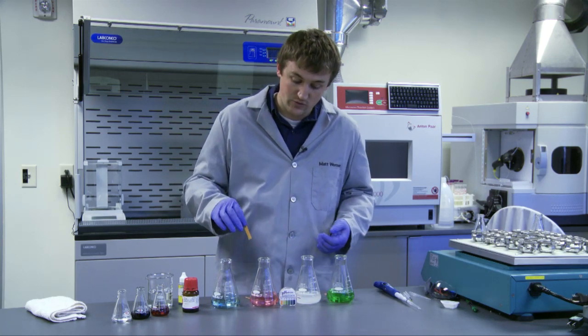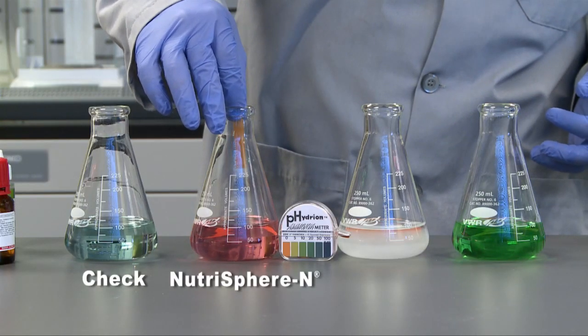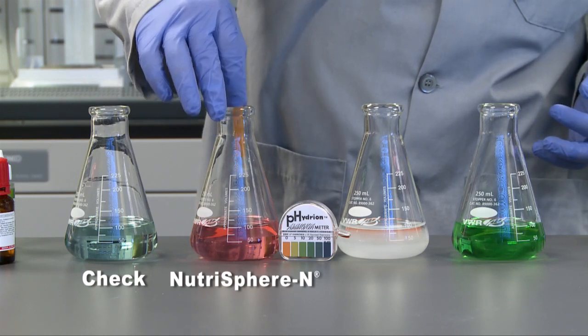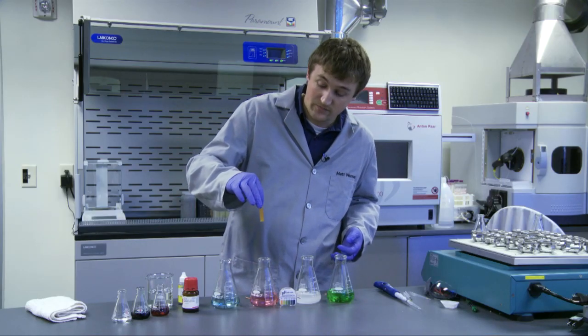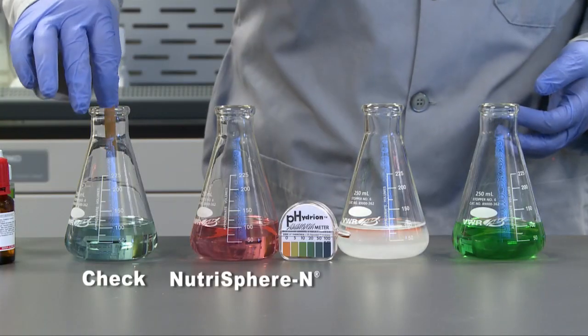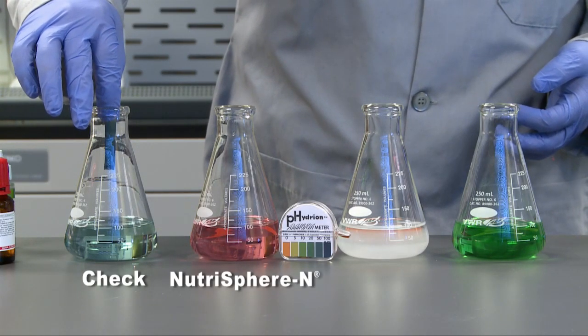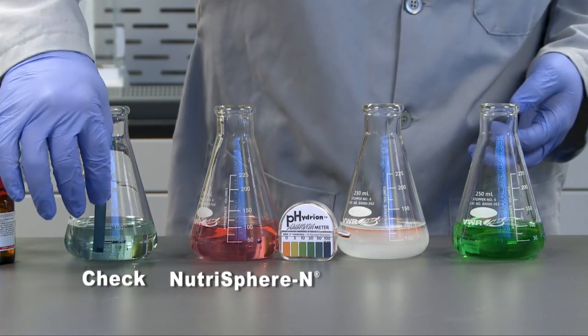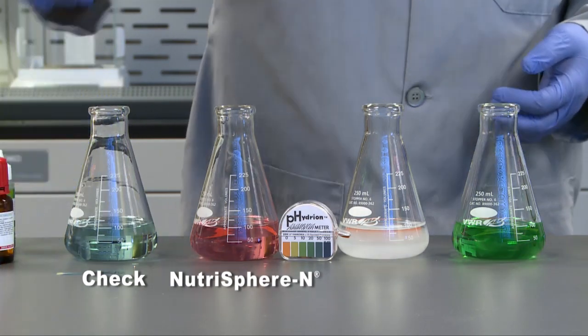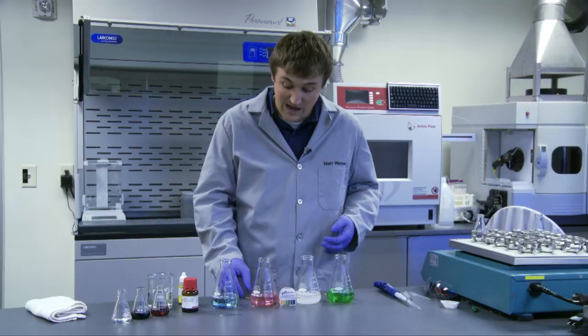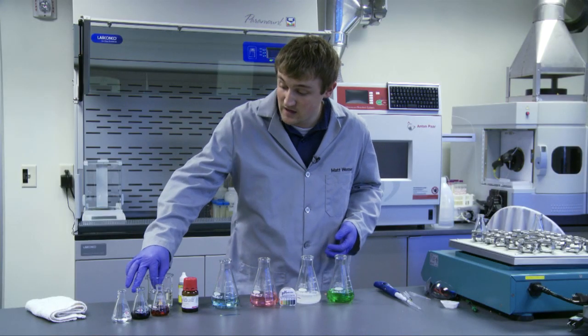So, this is our NutraSphere N flask. As you can see, it has not changed color. So, when we put it in our check, it changes color almost instantly. Very dark. So, that is a great indication that we have a lot of ammonia above that solution and it's not inhibiting that enzyme at all.